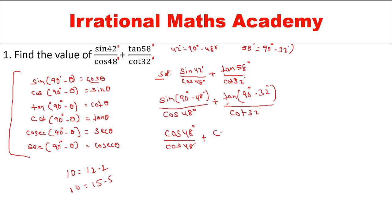Applying sin(90 minus theta) = cos theta, the first term becomes cos 48 degrees by cos 48 degrees. Applying tan(90 minus theta) = cot theta, the second term becomes cot 32 degrees by cos 32 degrees. After simplification, cos 48 over cos 48 equals 1, and cot 32 over cos 32 simplifies to give 1 as well, so the answer is 2. Is it clear? Next question.